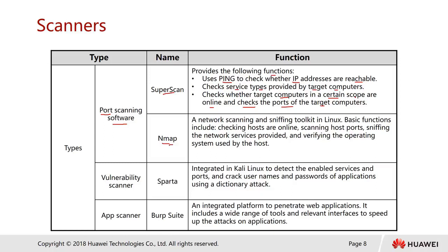Nmap does similar things but is primarily designed for Linux. It is a network scanning and sniffing toolkit for Linux. Basic functions include checking whether hosts are online, scanning host ports, sniffing the network services provided — for example, what web server is running on port 80 — and verifying the operating system used by the host using fingerprint identification to determine whether the destination machine is running Linux or Windows, and which version.